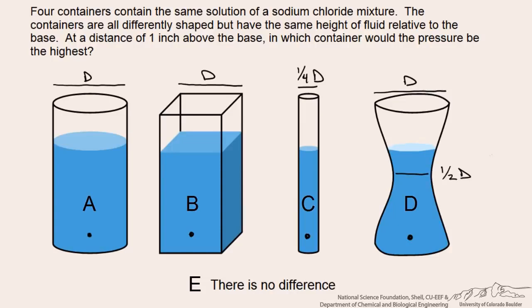You can see the cylinder on the left has a diameter of D, same with the cylinder on the right, but in that cylinder it constricts to a diameter of half that at the middle. We have a cylinder with a quarter of the diameter from the first container, and then we have this square prism shaped container that has a side of length D.